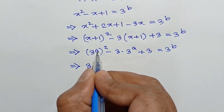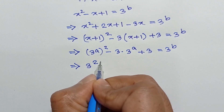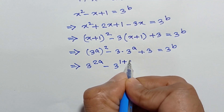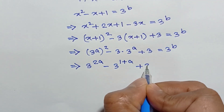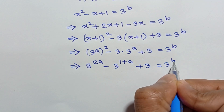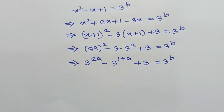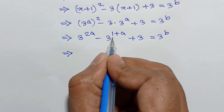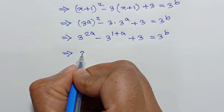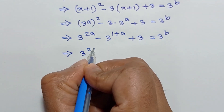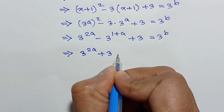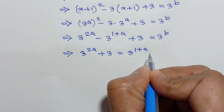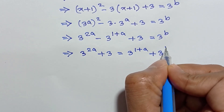So 3 to the power 2a minus 3 to the power 1 plus a plus 3 is equal to 3 to the power b. Taking the relevant part to the right side, we can write 3 to the power 2a plus 3 is equal to 3 to the power 1 plus a plus 3 to the power b.